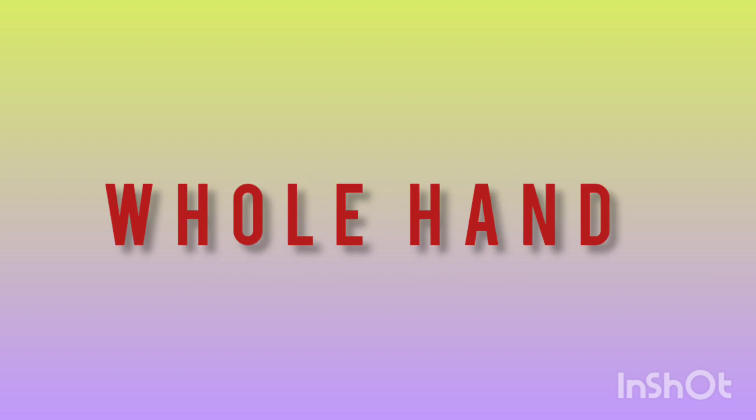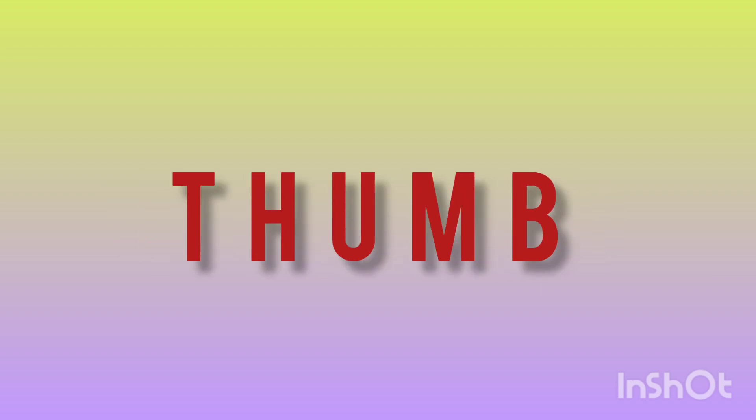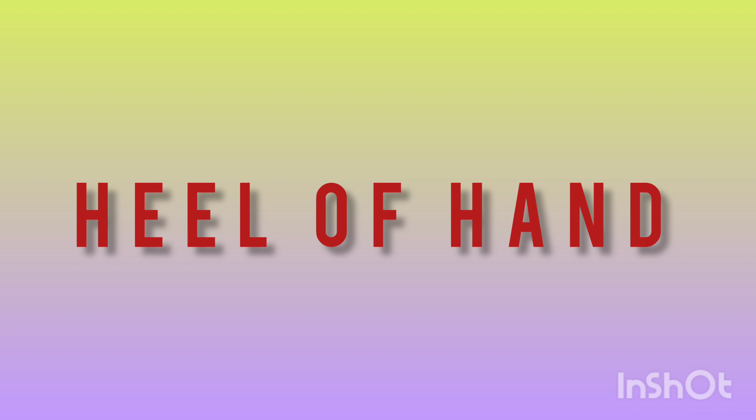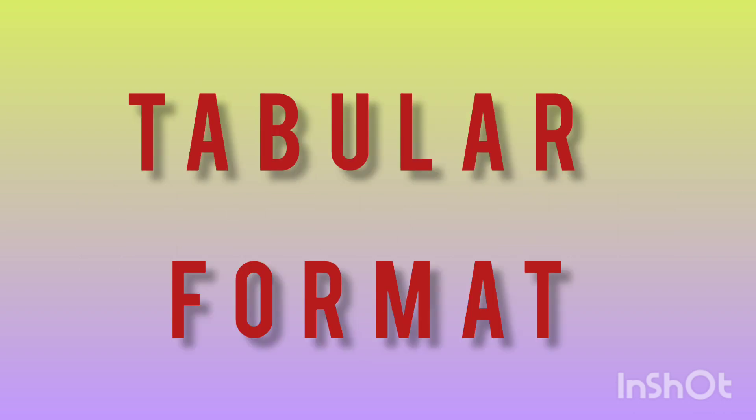The next header is types of kneading. They are whole hand, palm, finger, thumb, and heel of the hand kneading. Tip number 3: describe all these types in tabular format.